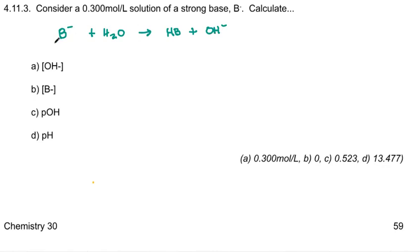And in this one, again, we have 0.300 moles per liter of B. Every one of these will react and so we will get 0.300 of the conjugate acid. We'll get 0.300 of hydroxide. And the B will have all vanished. Every one of them took up a hydrogen and turned into HB. So there's none left.